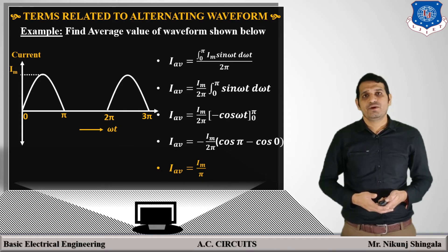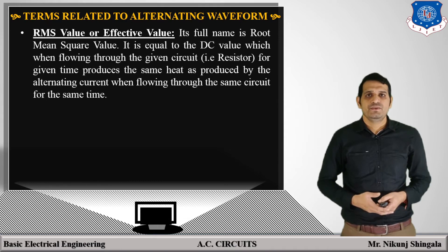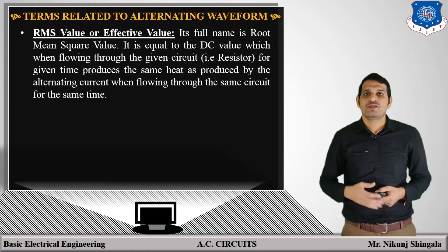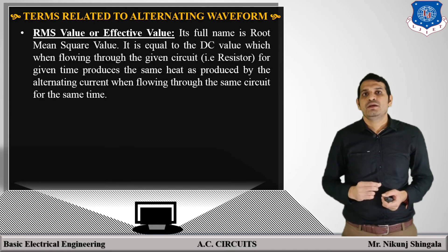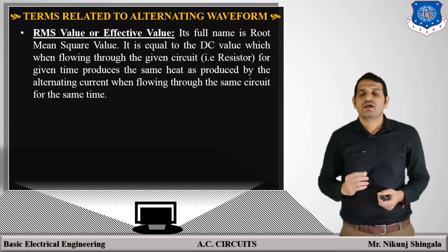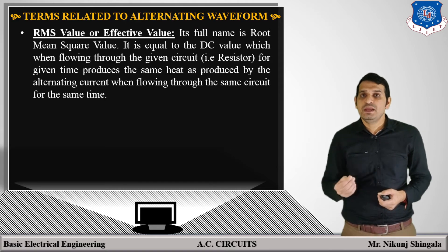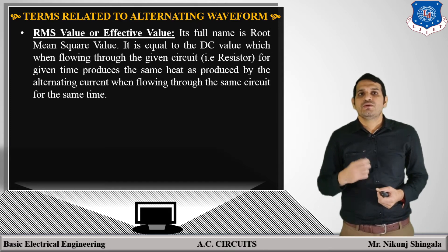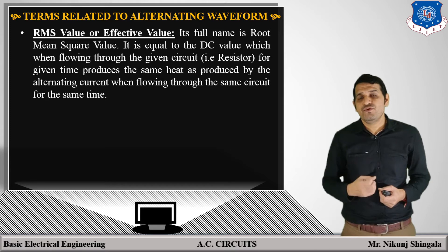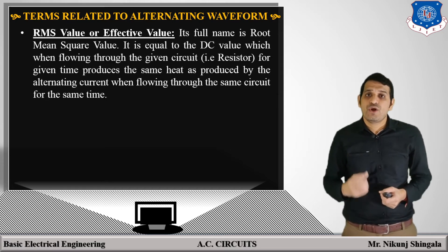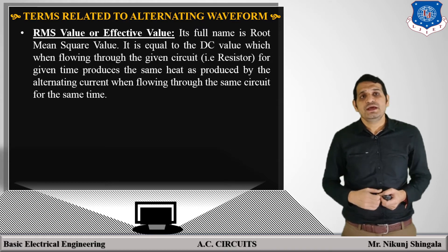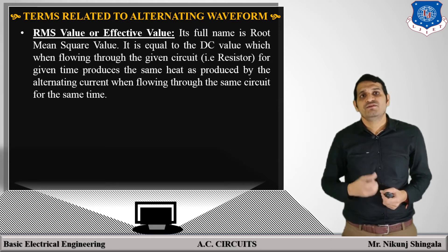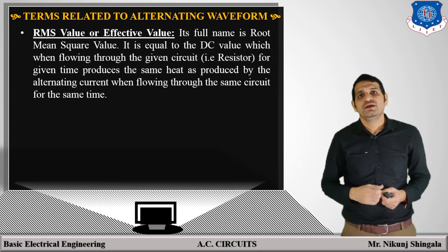Moving towards the next topic: RMS value, also known as the effective value. RMS stands for root mean square. For a given waveform, first we take the square, then the mean, and then the square root. The RMS value is equal to the DC value which, when flowing through a given resistive circuit for a given time, produces the same heat as produced by the alternating current flowing through the same circuit for the same time.